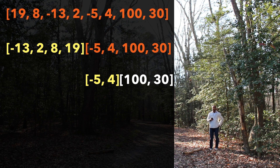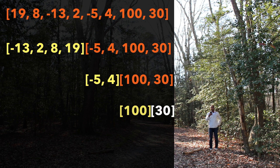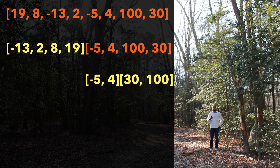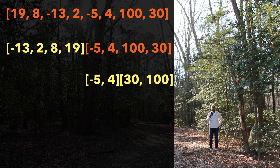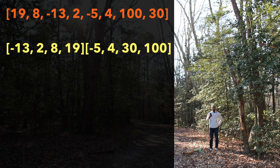Now we go right and need to sort 130. We go left and sort 100 — that's sorted, return. Then we go right to 30 — that's sorted, return. Now we have two sorted arrays: 100 and 30. We merge those two sorted arrays, which we can do in M plus N time — linear time with respect to each array. We get 30 and 100. Now we have the left portion negative 5, 4 and the right portion 30, 100. We merge those into the sorted array negative 5, 4, 30, 100.